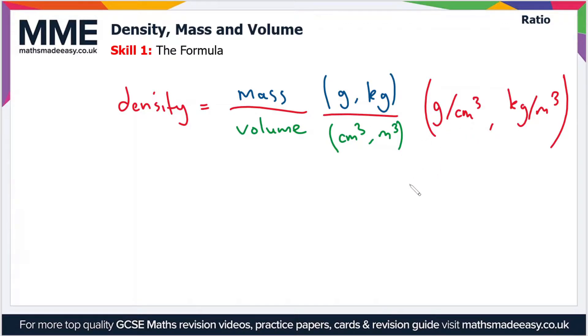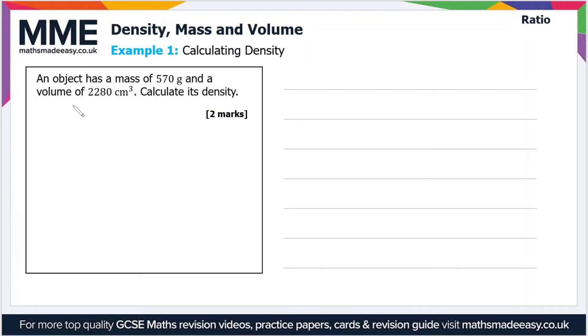For the first example: an object has a mass of 570 grams and a volume of 2280 centimeters cubed. Calculate its density. I'm going to draw out the triangle again. We have density equals mass divided by volume, so we separate the density and the volume by this vertical line.